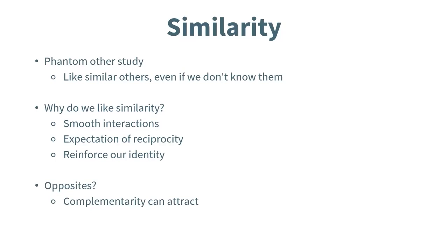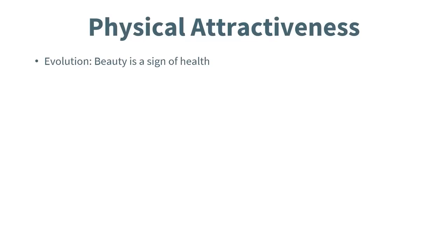What about opposites? While there is work suggesting opposites can attract, it more likely involves complementarity rather than stark opposition. For example, your partner is extroverted and you're shy — rather than being opposites, you're complementing each other's styles. It might also seem like people are opposite, but overall they may tend to be more similar than different to those they're attracted to, and they may also become more similar over time.